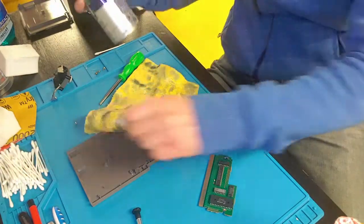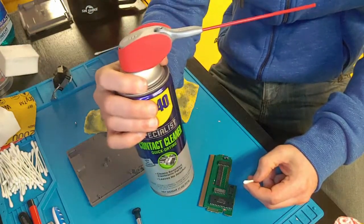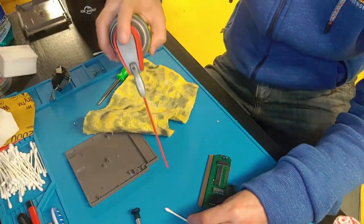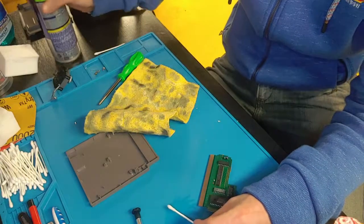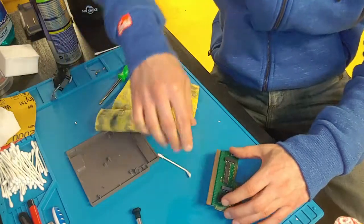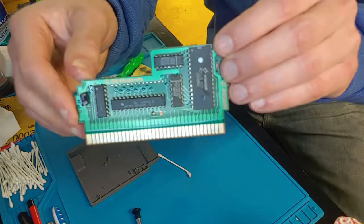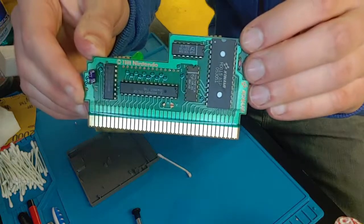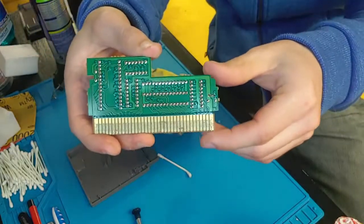Next, grab a clean Q-tip and some contact cleaner. You can spray that right onto the Q-tip. This is another very, very important part. This is where you're going to remove the excess Brasso. Very important step. The issues begin to arise here when there is Brasso left on the board or the pins.